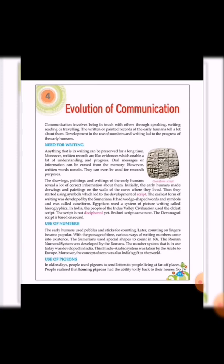Initially, the early humans made drawings and paintings on the walls of the caves where they lived. Then they started using symbols which led to the development of script. The earliest form of writing was developed by the Sumerians. It had wedge-shaped words and symbols and was called cuneiform. Egyptians used a system of picture writing called hieroglyphic. In India, the people of the Indus Valley Civilization used the oldest script. The script is not deciphered yet. Brahmi script came next. The Devanagari script is based on sound.